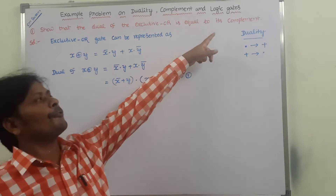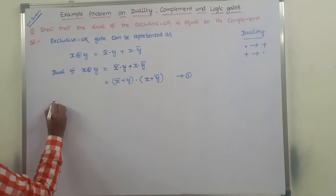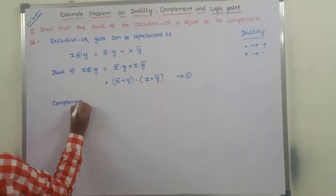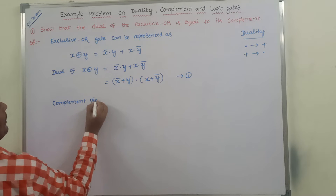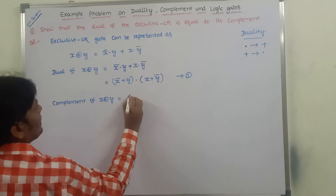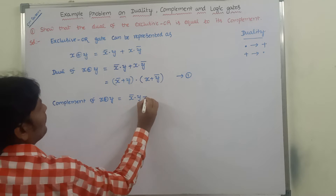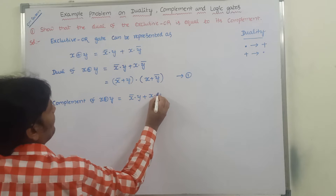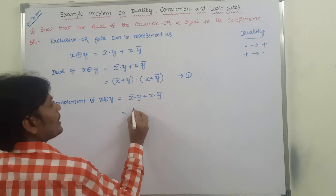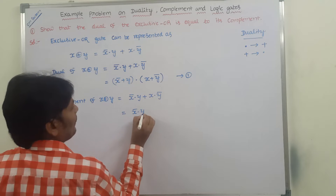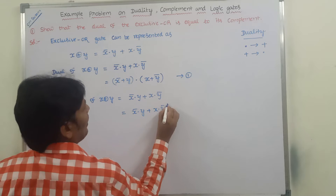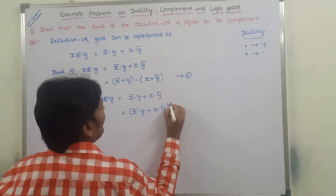Next, we have to find out the complement of the exclusive OR gate. The complement of X exclusive OR Y is equal to the complement of the whole expression X̄·Y + X·Ȳ, taken as a whole bar. Now we have to find out this complement.